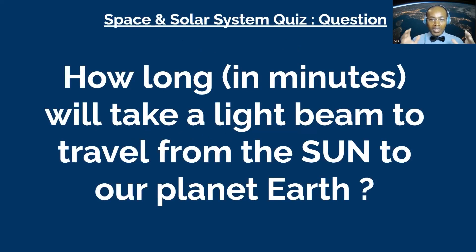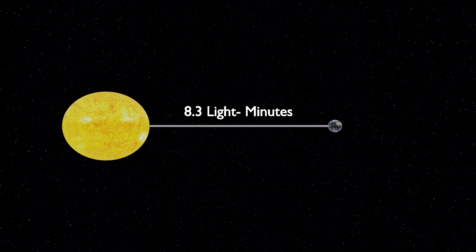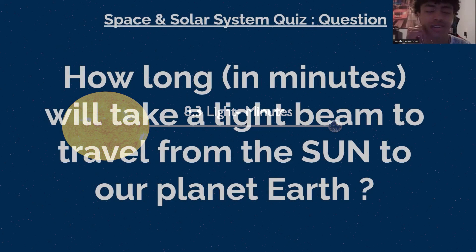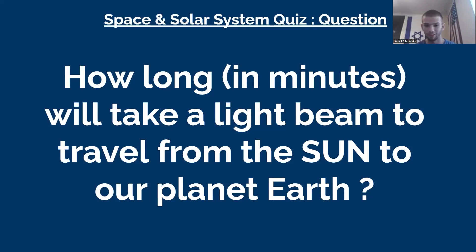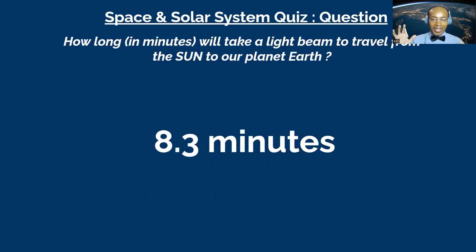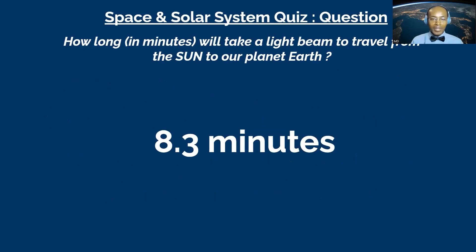Next question goes to Isaiah — a space question. How many minutes does it take a light beam to travel from the sun to planet Earth? Isaiah guessed 0.0005 minutes, which wasn't right. David guessed seven minutes — really close! The correct answer is 8.3 minutes, but David gets a dollar for being close.